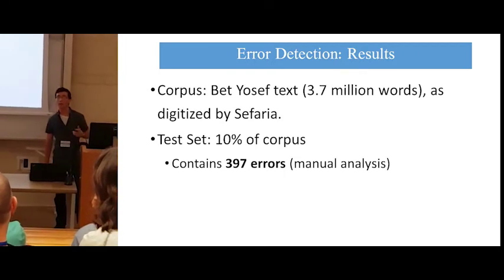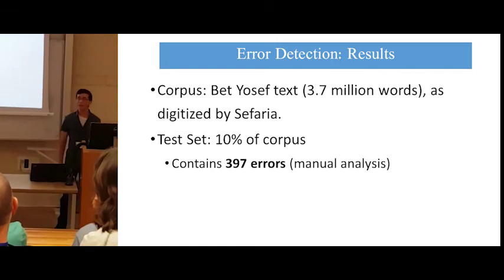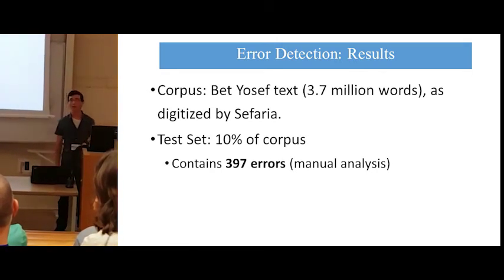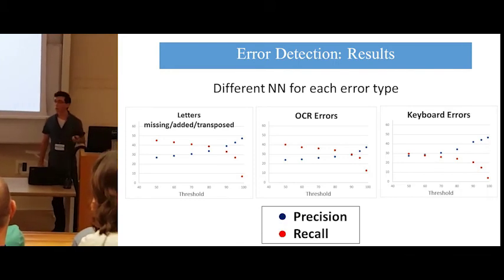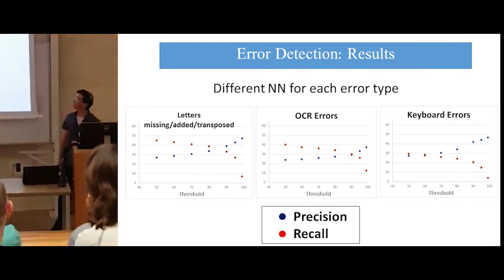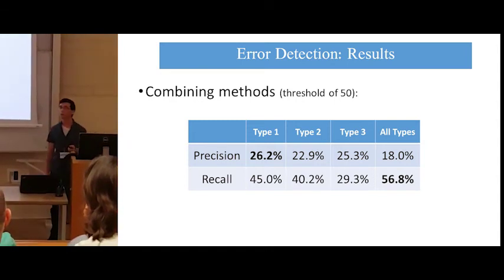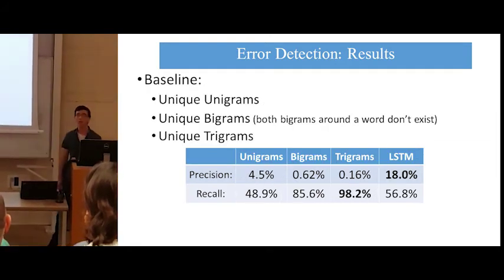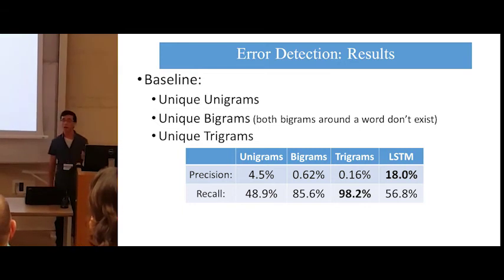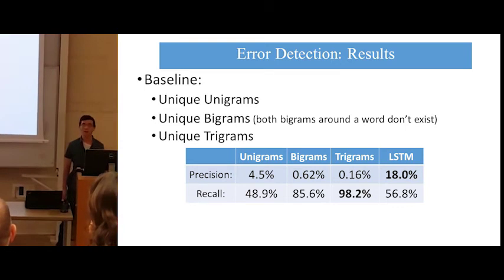We ran our algorithm on the Beit Yosef text as digitized by Sefaria. We took the first 10% of the corpus and used it as a test set. We found that the test set contained 397 errors. Our goal is to train a network to find as many of these errors as possible. We trained a different neural network for each of the three error types. We combined all three methods together at a threshold of 50, and achieved a recall of over 50%. We compared our method to three baseline methods: unique unigrams, bigrams, and trigrams — where we flagged a word as a suspected error if the given n-gram does not appear anywhere else in our corpus.